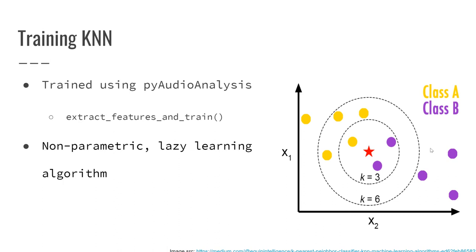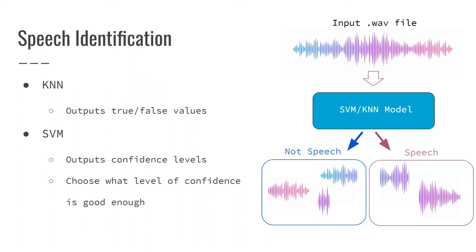We also evaluated the k-nearest neighbors algorithm. For this model, you pass the parameter k for an odd number of neighbors to compare the unclassified input to. The two labels are weighted according to the proximity to the unclassified input's features and by the number of each labeled class within the k number of neighbors. This is a much simpler algorithm than the SVM and produced slightly worse results for labeling speech. Between the two models, we ended up using the SVM more often, as the KNN outputs binary classification — speech or not speech — whereas the SVM outputs confidence levels, allowing us to choose a threshold to define what confidence level is necessary to classify speech.